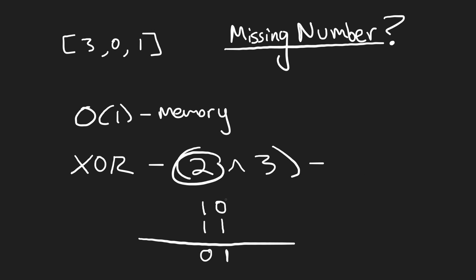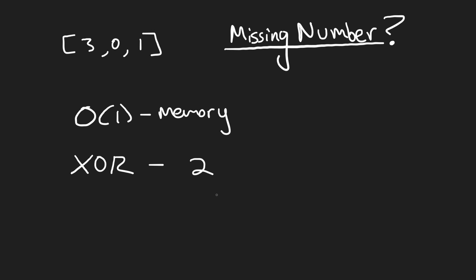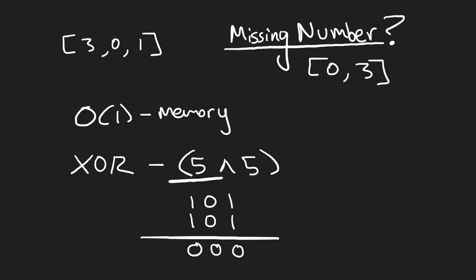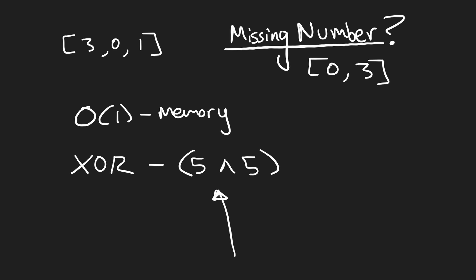Why is XOR helpful here? What happens when we take two numbers that are the same and XOR them? For example, 5 XOR 5. Five in binary is 101. XORing bit by bit: same, same, same — we get 000, which is zero. When you take any number and XOR it with itself, the result is always zero, because every bit is the same and therefore evaluates to 0.